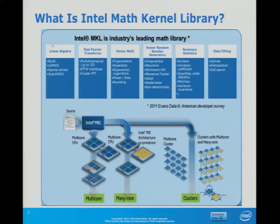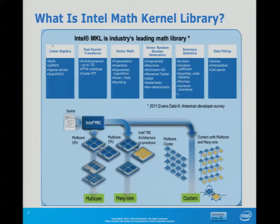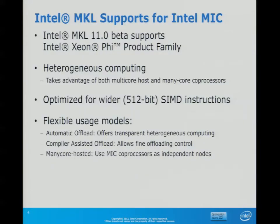MKL is always enabled for the latest Intel architecture, and once an architecture is no longer current it just remains as-is until you find a bug or a performance drop. For example, for vector random number generation there will be support for Ivy Bridge — they have instructions for random number generation already in there. There is also summary statistics and data fitting included, and the next slide will tell you what the support is on the MIC side.